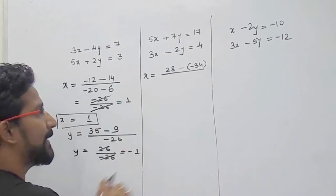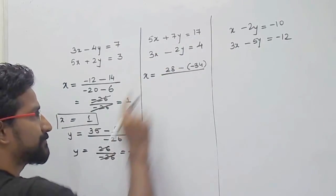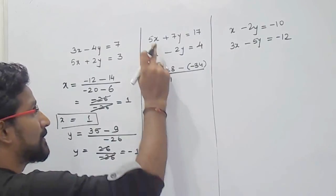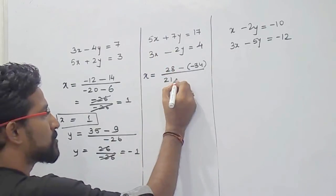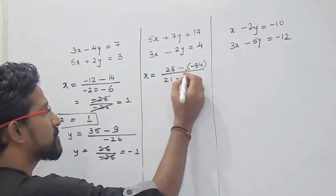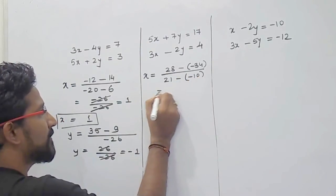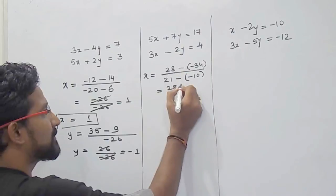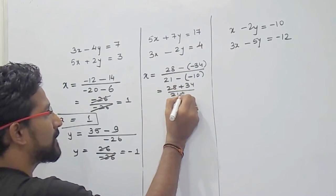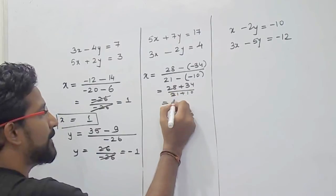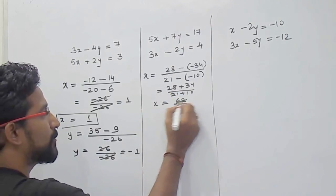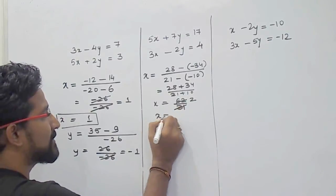For the denominator: cross-multiply 7 into 3, which is 21, then 5 into minus 2, which is minus 10. So it will be 28 minus into minus, that is plus 34, divided by 21 plus 10. That gives 62 divided by 31, and since 31 times 2 is 62, x equals 2.